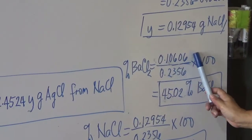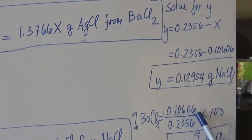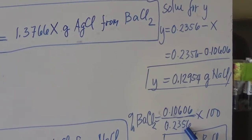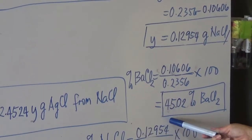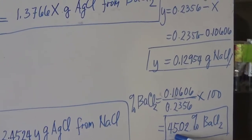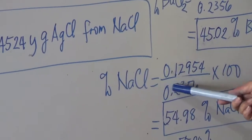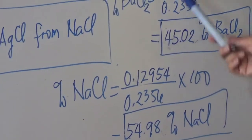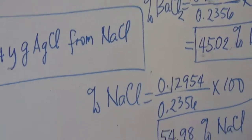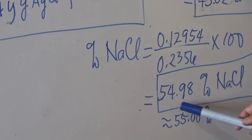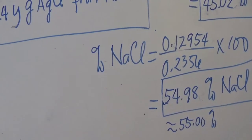To compute the percent barium chloride: 0.10606 grams divided by 0.2356 grams times 100, which gives approximately 45%. For sodium chloride: 0.12954 grams divided by 0.2356 times 100, giving approximately 54.98%, or roughly 55%.